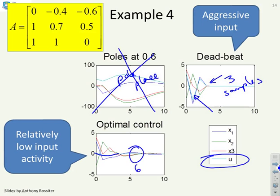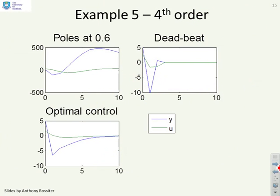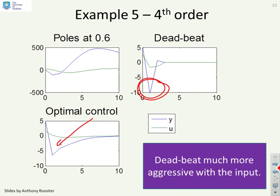Now the tuning of the optimal control is a bit arbitrary but what do you notice? This is the sort of trade-off you're looking at. With deadbeat control you tend to get very aggressive inputs and you also tend to get fairly aggressive state trajectories. Here's a last example and you'll see a similar pattern where the state trajectory is quite aggressive compared to what you get with optimal control and similarly the input is slightly more aggressive. So deadbeat is more aggressive with the input and often more aggressive with the states.